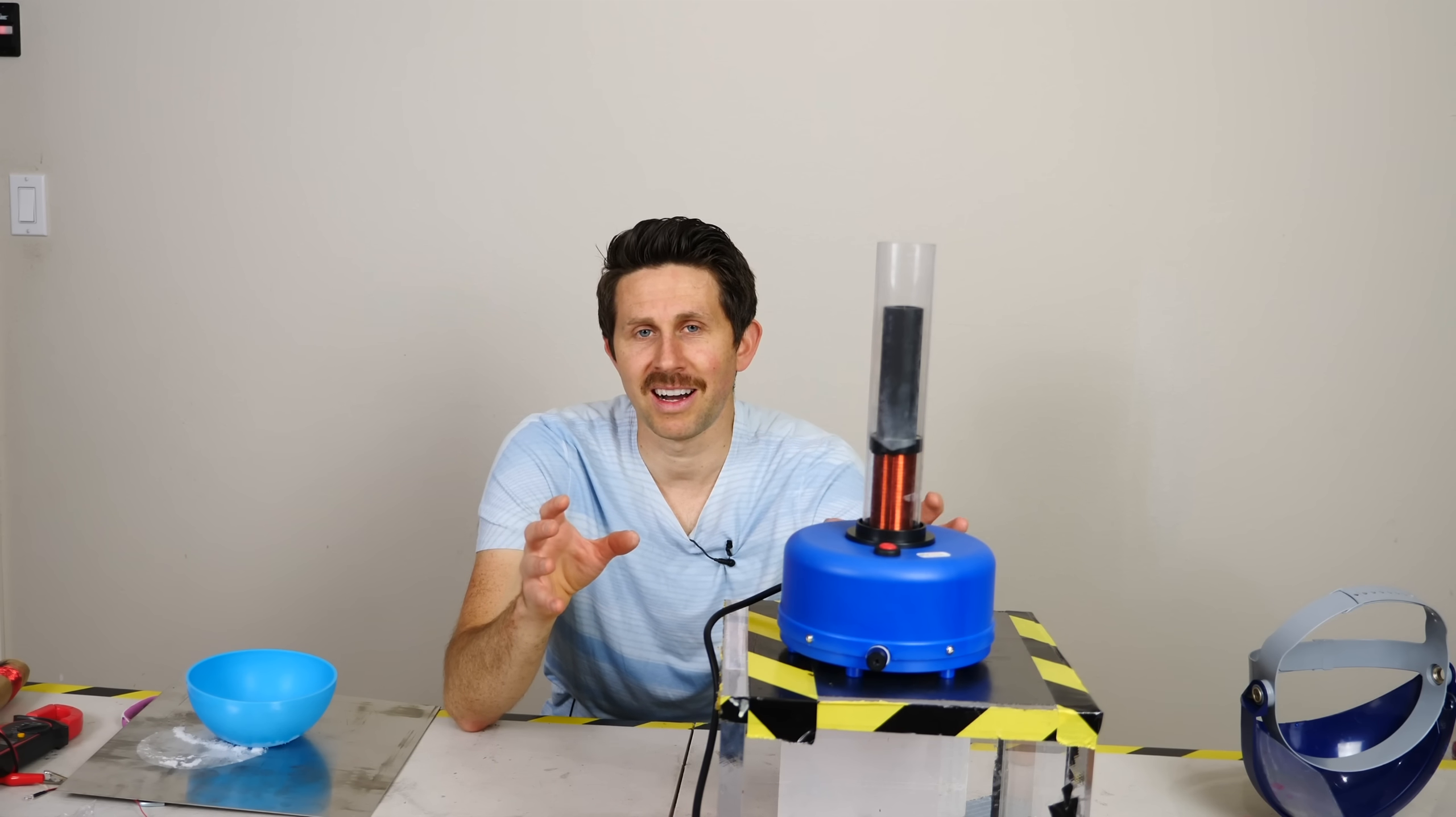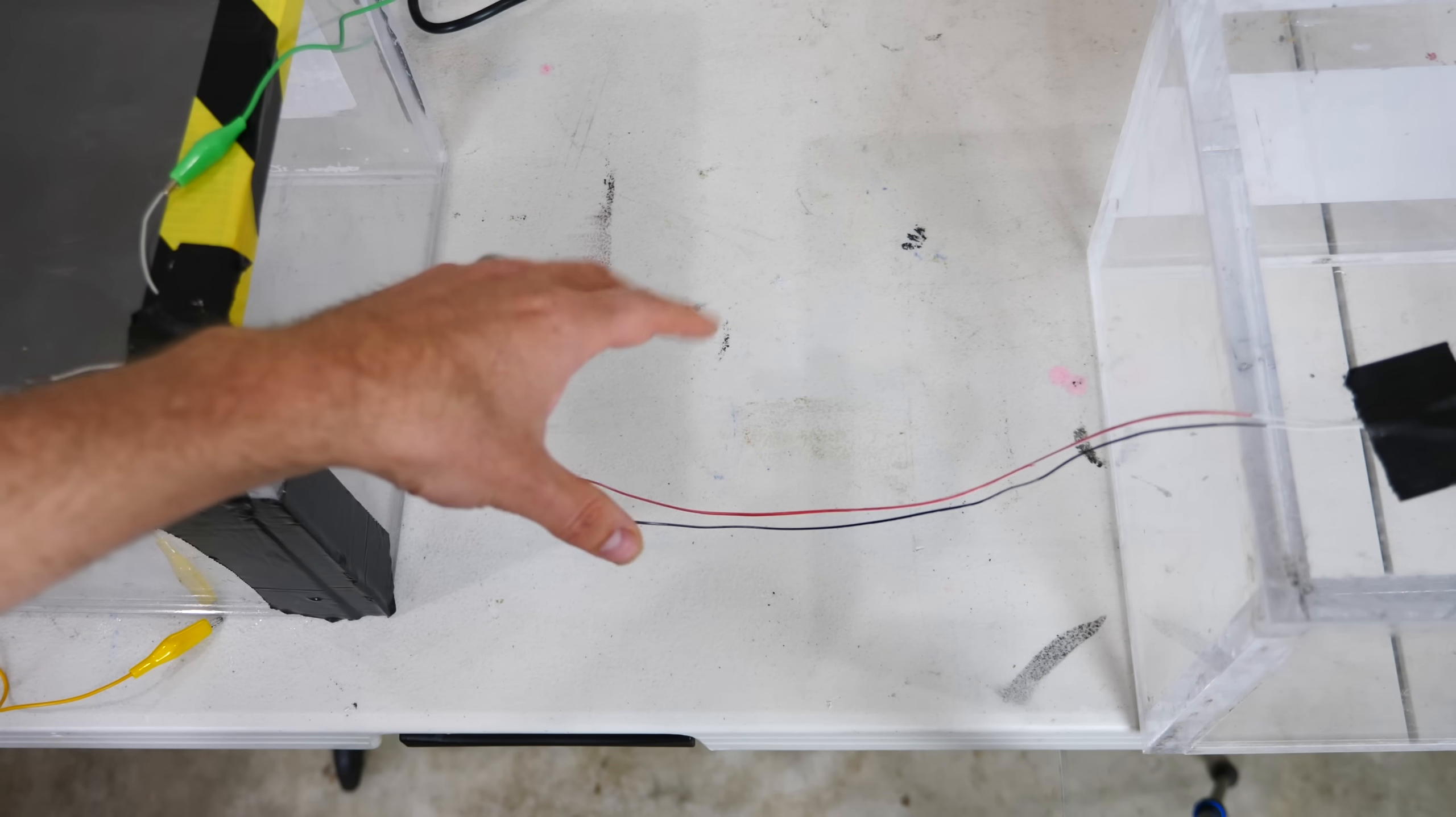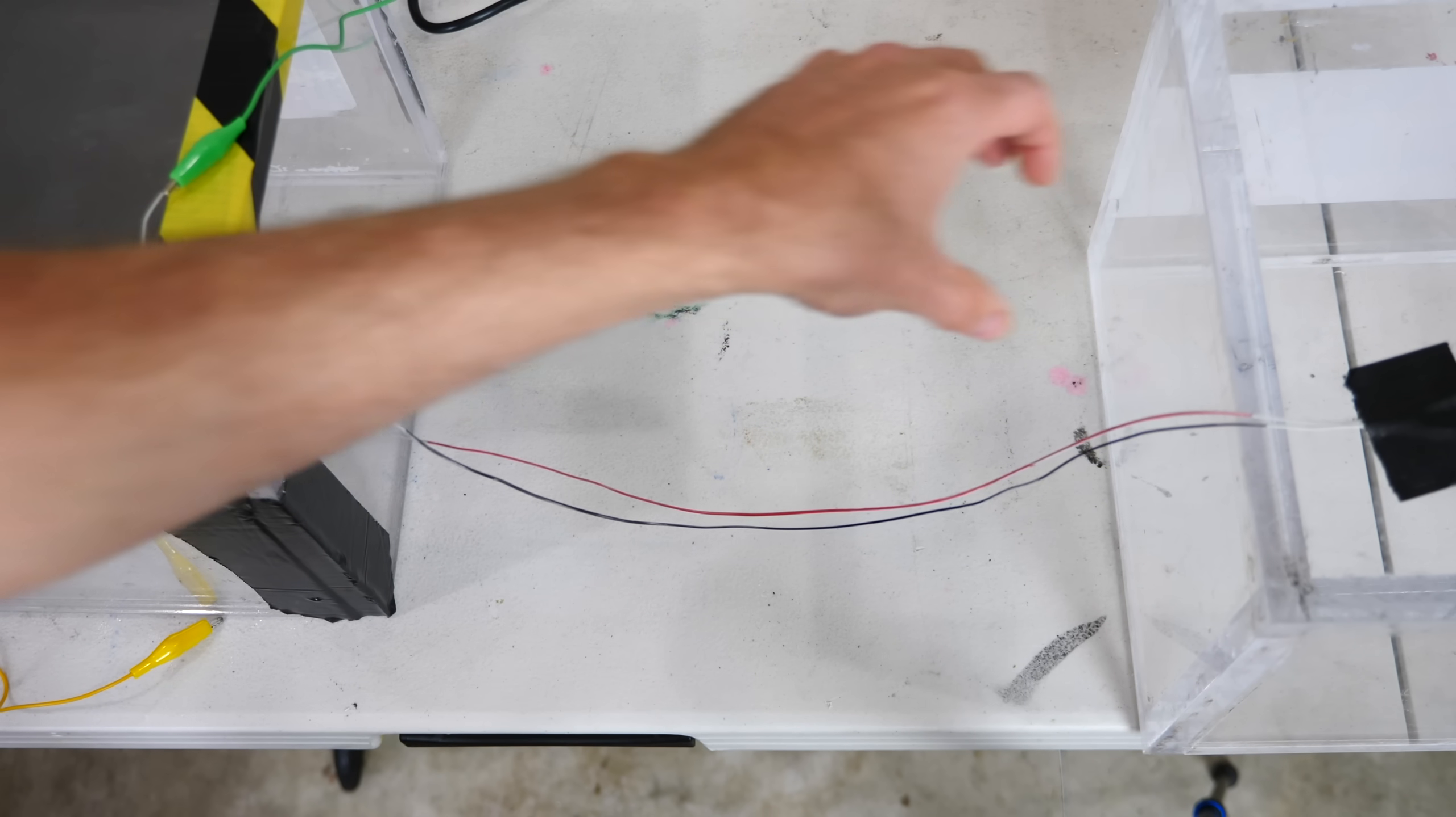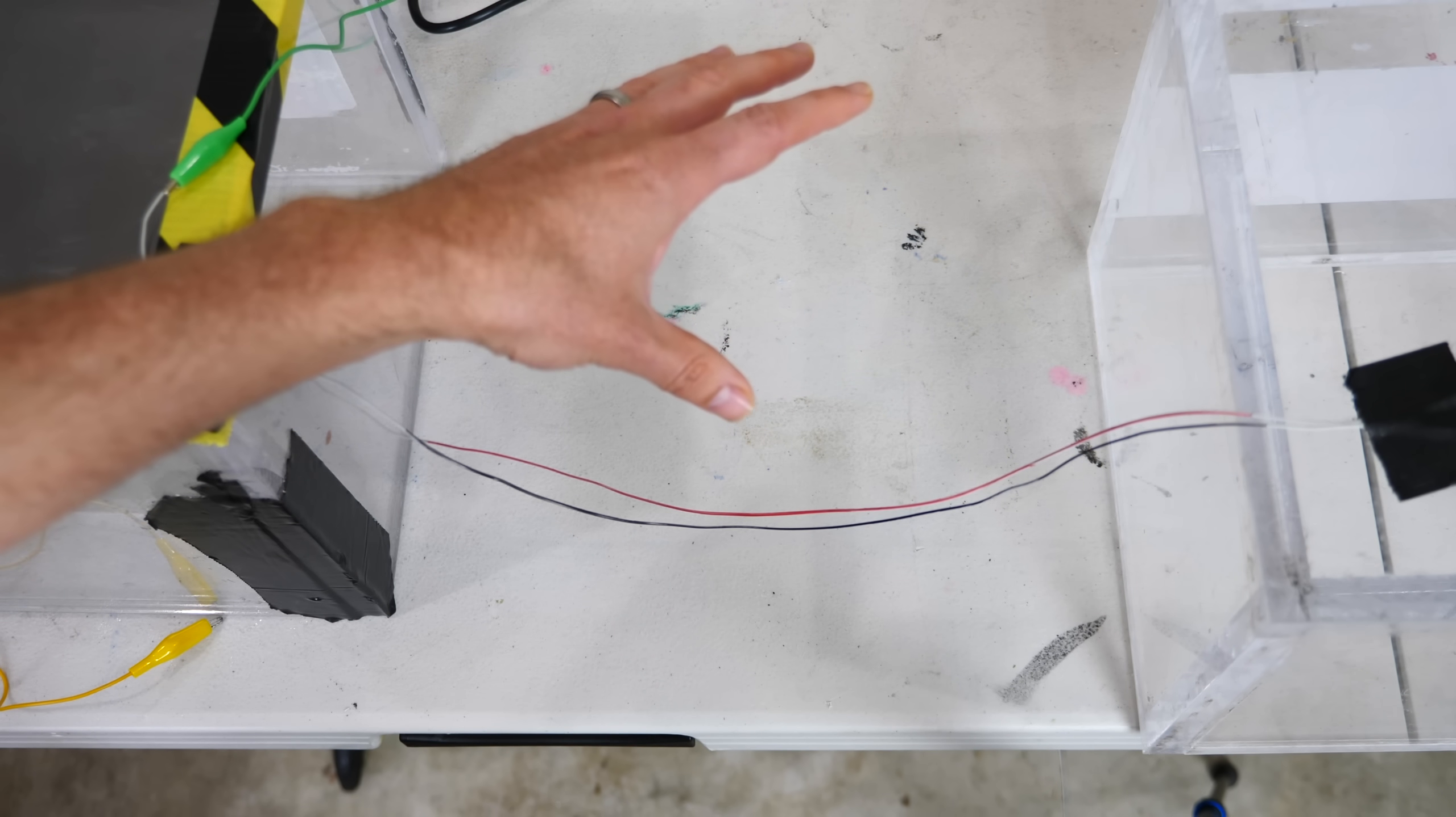Before I show you how awesome this is and how fast we can accelerate pieces of metal instantly, let me explain how it works. When an electron moves through space it creates a changing electric field because as the electron is moving it has a field around it and that field follows the electron. But as an electron moves through space, a changing electric field also creates a magnetic field. So what that means is if you move an electron, you create a magnetic field.